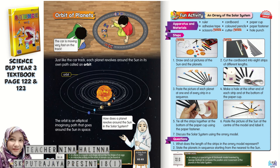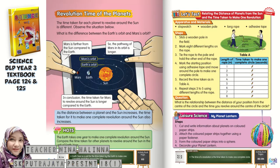Now, let's go to page 124 — the revolution time of the planets. Revolution time is the time taken for each planet to revolve around the sun. Obviously it would be different for each planet. The nearer a planet is to the sun, the smaller its orbit will be, so it will take a shorter time to complete one revolution.